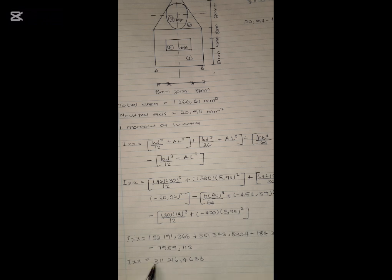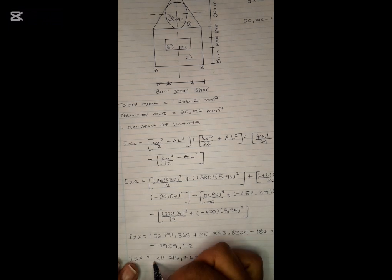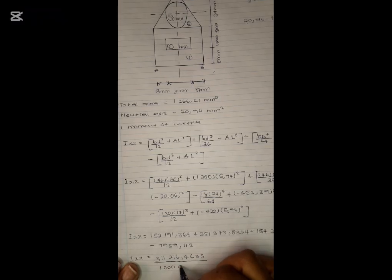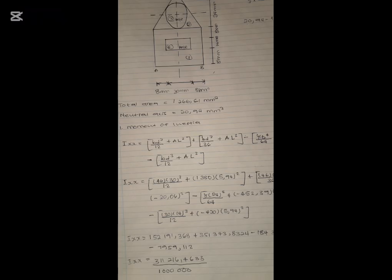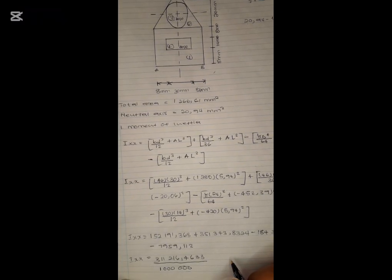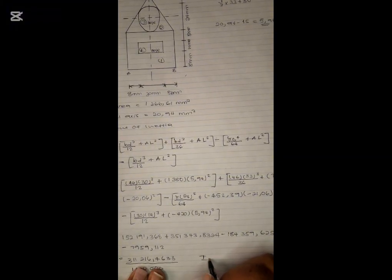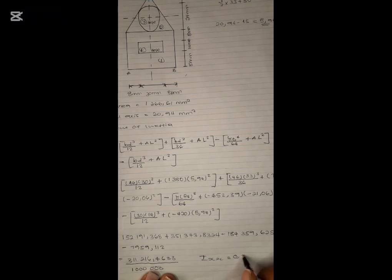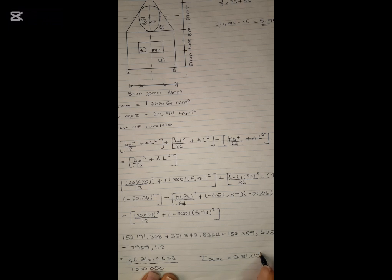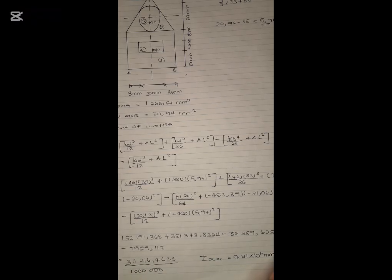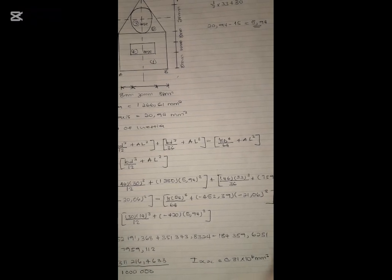Divide by one million and your final answer is IXX = 0.31 × 10⁶ mm². This is your final answer for moment of inertia.